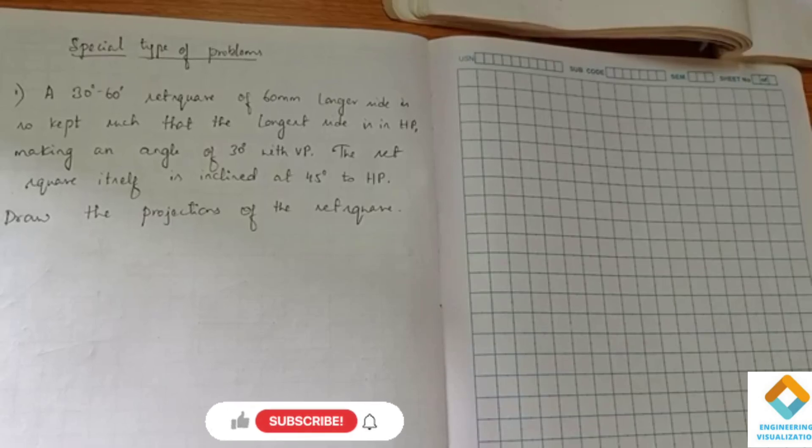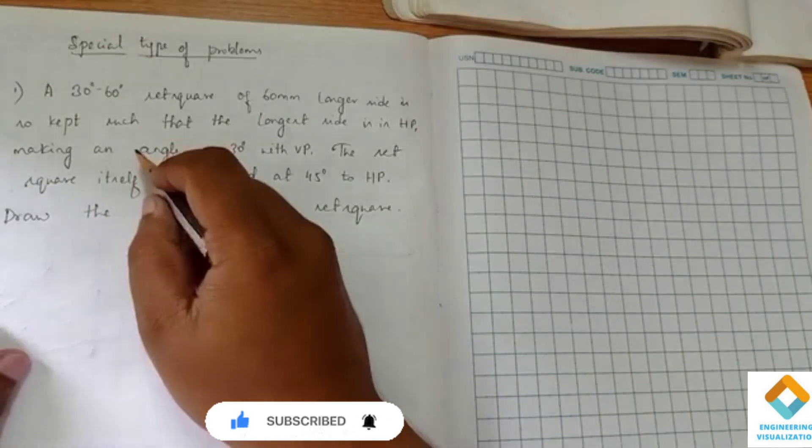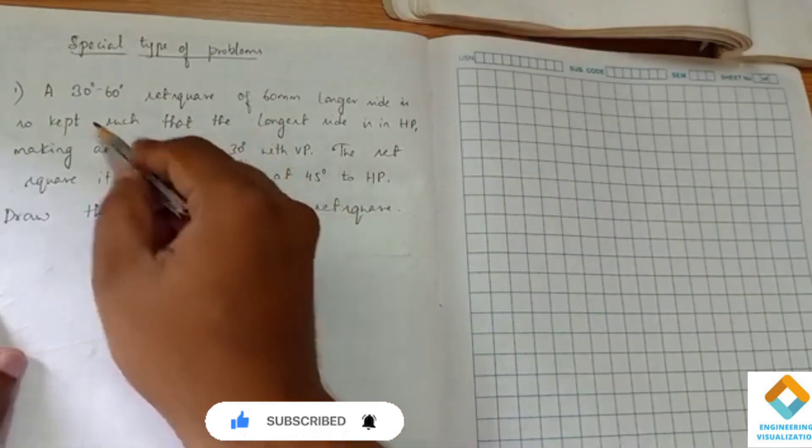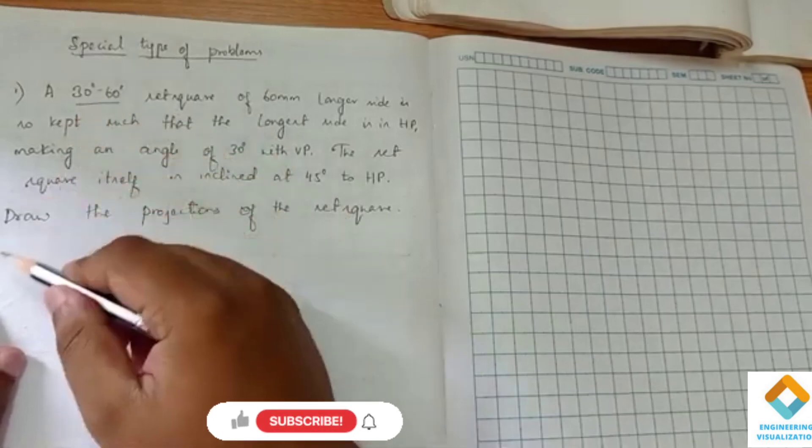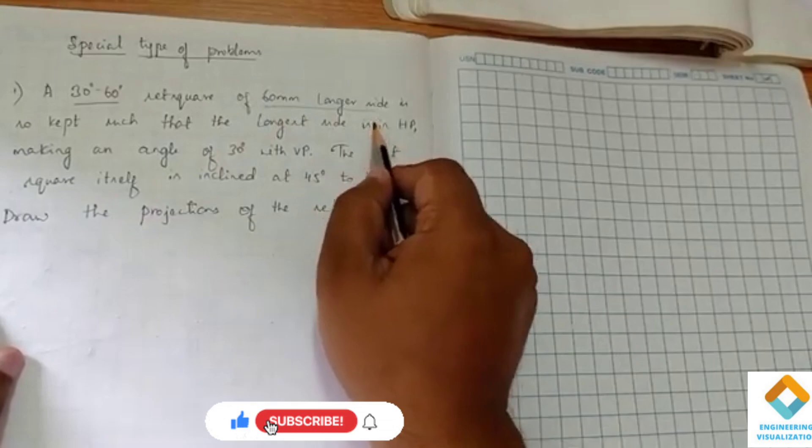Now we will proceed to the special type of problems. In the special type of problem, the first problem we are choosing is a set square. For the construction of a set square, they have given two angles here: 30 degree and 60 degree. Set square of 60 mm longer side is kept such that the longer side is in HP.